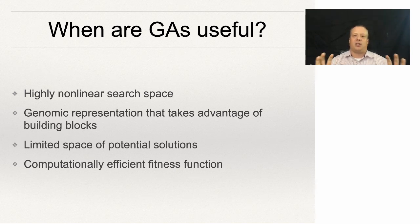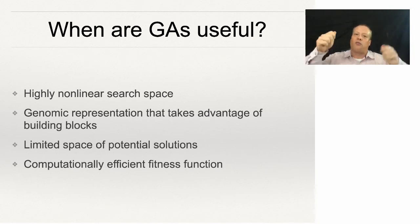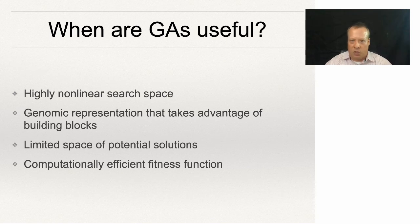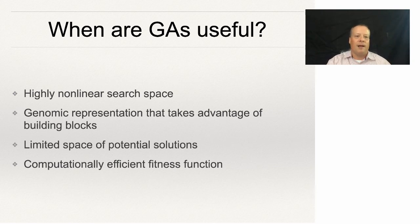There needs to be a limited space of potential solutions — the solutions can't be infinite, because the GA needs to be able to explore that space and you need to be able to encode it in the genome. The fitness function also has to be computationally efficient. GAs work because they run that fitness function a lot of times, evaluating thousands of individuals per population over multiple generations. If you don't have a computationally efficient fitness function, it's simply going to take too much time. That's when GAs are useful and work the best — hopefully you now have a better understanding of how genetic algorithms can help solve problems.